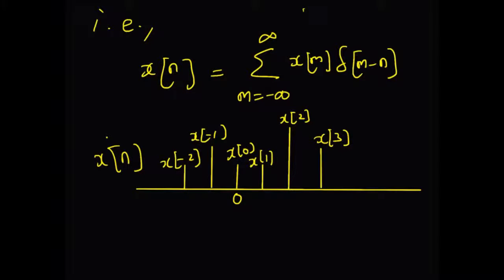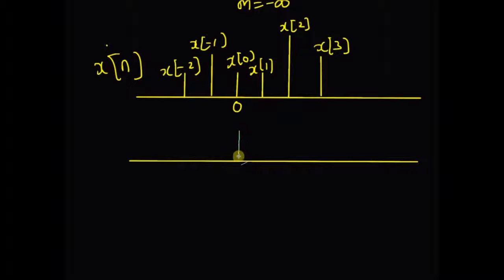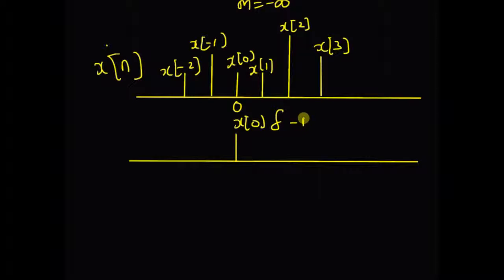Given an arbitrary signal like this, we can decompose it as a linear combination of infinite number of unit samples. For example, the value of the signal at x of zero can be represented as x of zero multiplied by delta of n, which is also equal to delta of minus n.